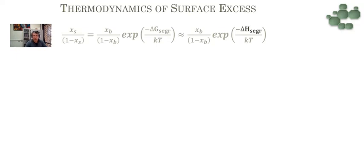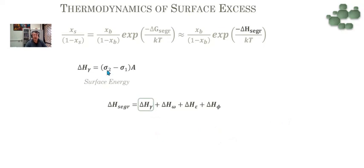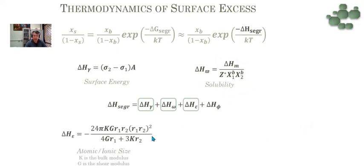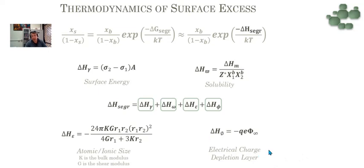Looking at the thermodynamics behind the surface excess, when you have a free energy of segregation, the concentration in the bulk and at the surface are not the same. The free energy of segregation is approximately equal to the heat of segregation. The heat of segregation has four components: the first is the difference of surface energy between the solute and the solvent; the second is related to the solubility; the third is the difference between atomic or ionic size — when you have a big difference between ionic radii, it is easier to segregate; and the last one is the electric charge related to the charge of ions in the system, related to the depletion layer.